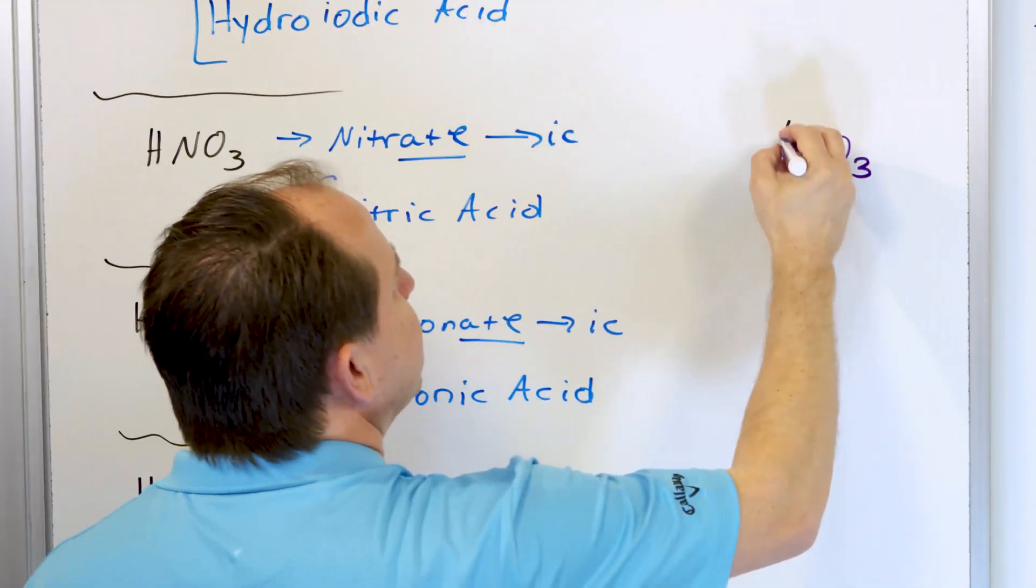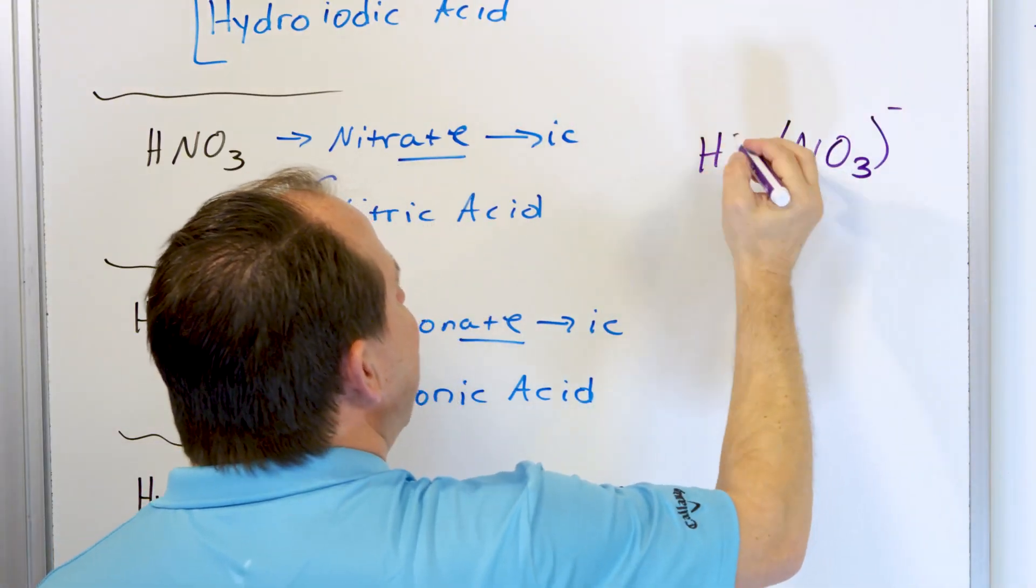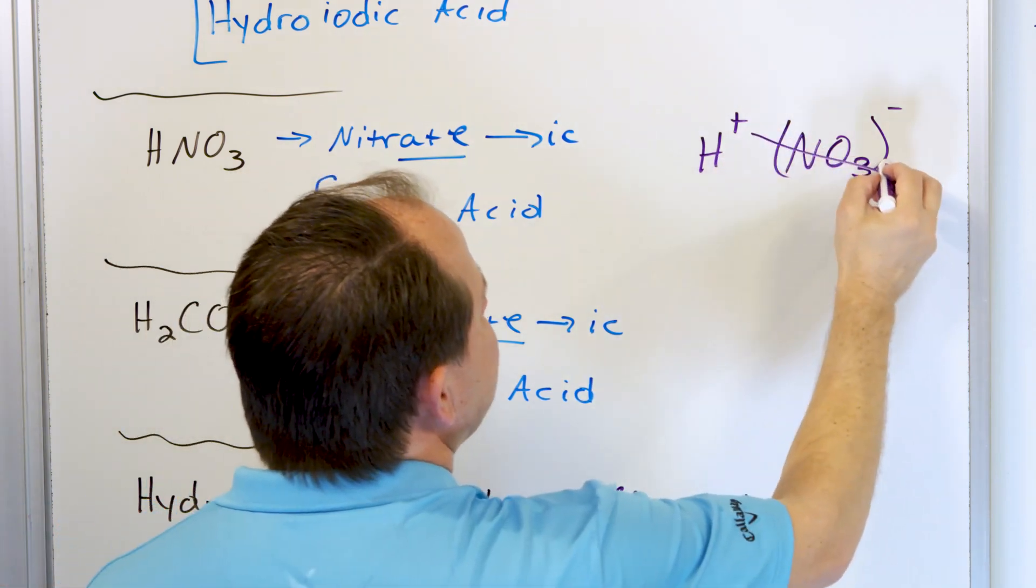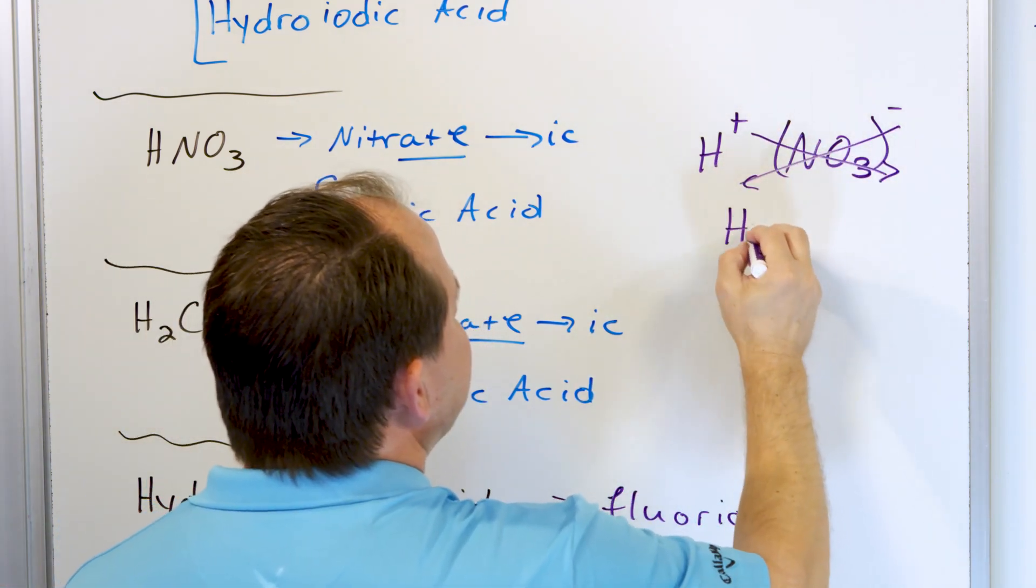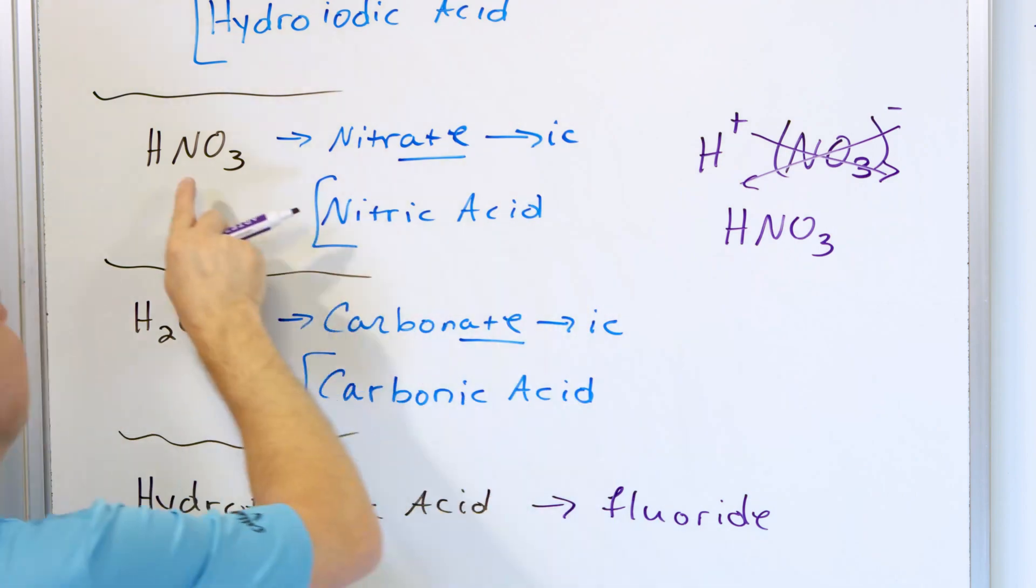And what is the charge on a nitrate polyatomic ion? The charge is negative one. So negative one goes here. We have hydrogen, which always takes positive one charge there. And then you have HNO3, and you can reverse engineer.